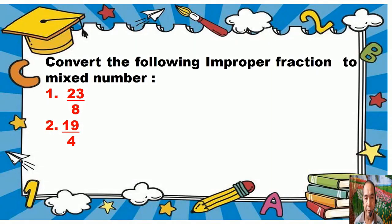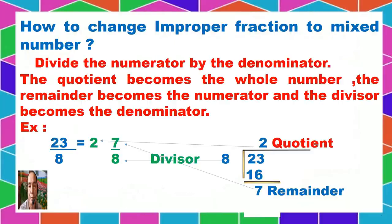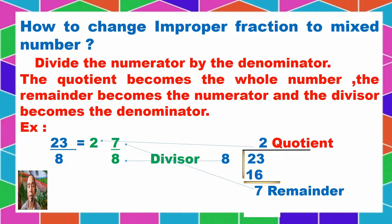Let us convert the following improper fractions to mixed numbers. To change an improper fraction to a mixed number, we will divide the numerator by the denominator. The quotient becomes the whole number, the remainder becomes the numerator, and the divisor becomes the denominator.